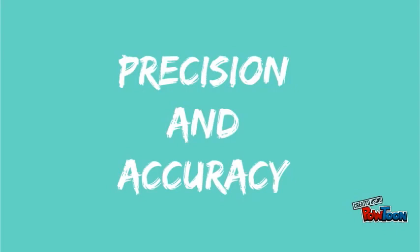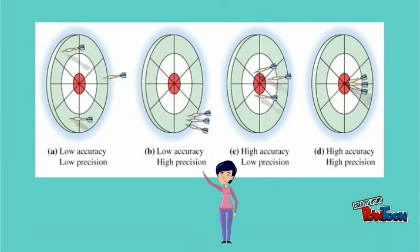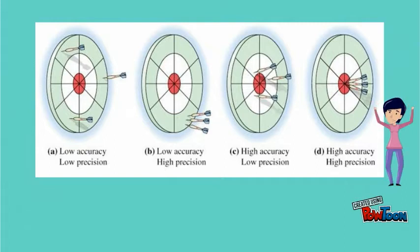Two topics we're going to talk about a lot this semester are precision and accuracy. For precision, it tells us something about reproducibility or uncertainty in a measurement that we take. To figure out precision we can look at something called significant figures, which we'll discuss in a moment. Accuracy refers to how close our experimental value is to a known value when we do a calculation based on measurements taken in the lab.